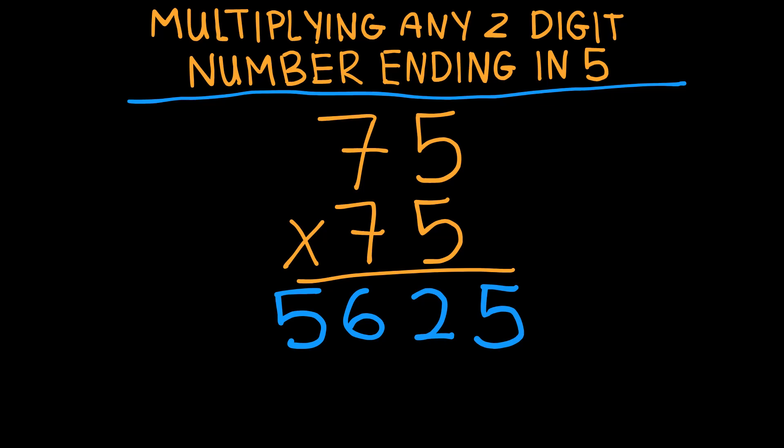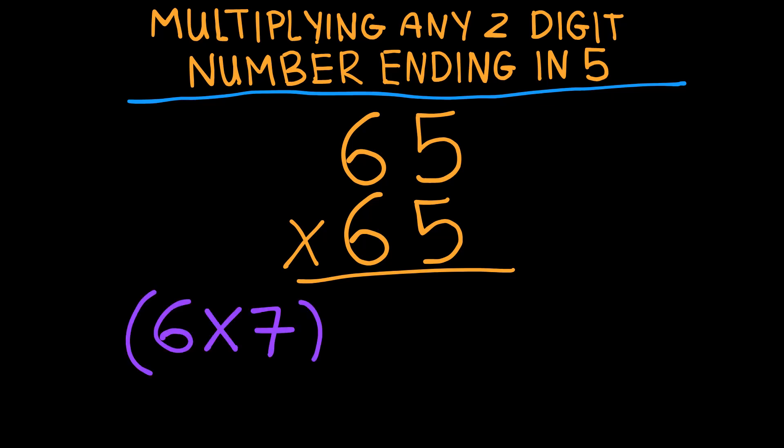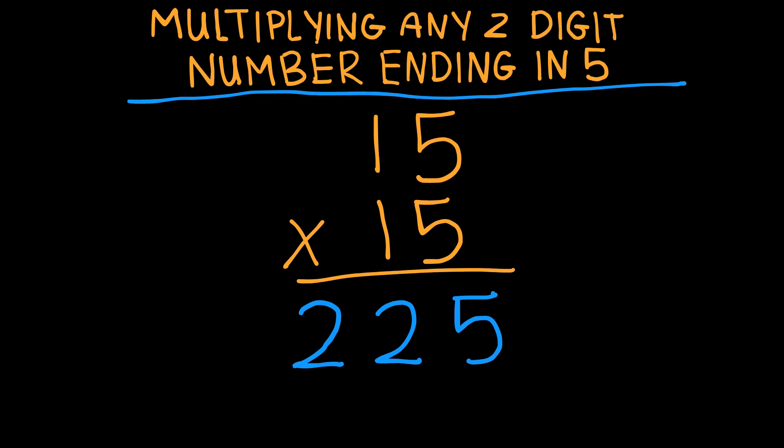Here's another example: we take the first digit, which is 6, and we will multiply it by 7. 7 times 6 is 42, and we simply add 25. We have our final answer, 4225. Here's another example: 15 times 15. We will multiply 1 times 2, which is 2, and add the 25: 225 as the final answer. Here's another example: 3 times 4 is 12, add 25: 1225. You see, as quickly as that, faster than a calculator!